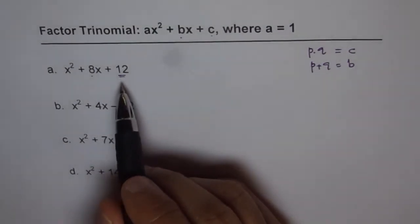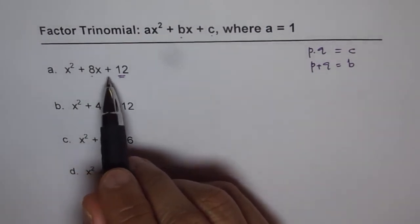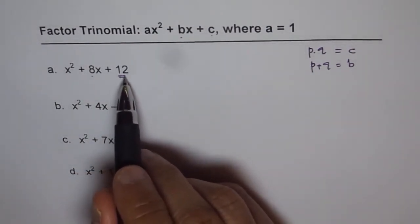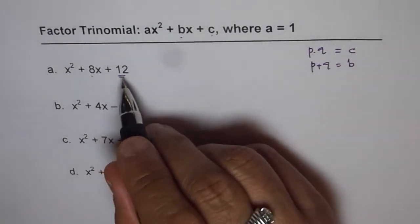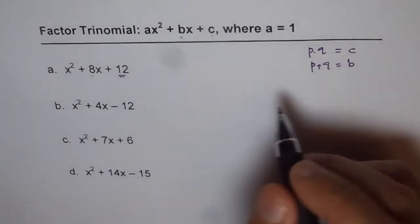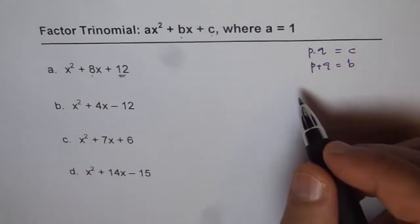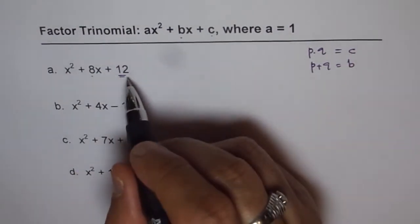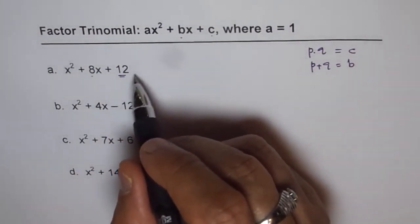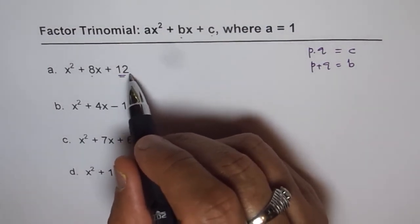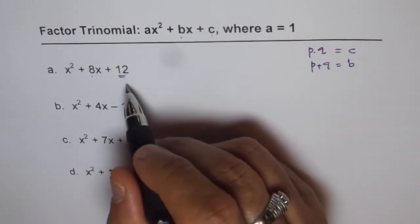The very first one is x² + 8x + 12. Here we are looking for a product of 12. So the two numbers which could give us product of 12 and we need sum of 8. For example, 4 times 3 is 12, right, but 4 plus 3 is not 8.